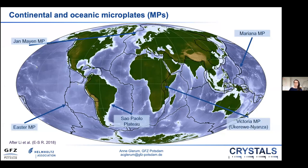I've highlighted a few examples on this map. One well-known example is the Easter microplate in the East Pacific Rise, which is currently active — meaning it's rotating independently of the surrounding major plates. The continental microplate Victoria, on the other hand, is a currently active microplate that formed through the interaction of two continental rift branches.